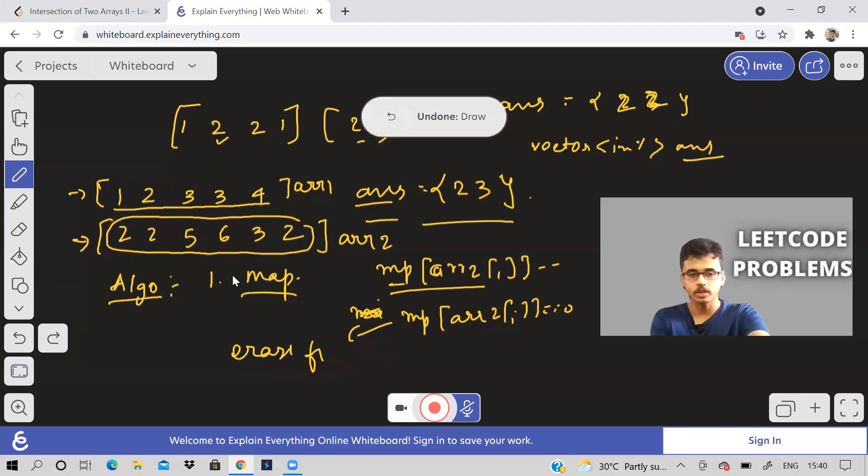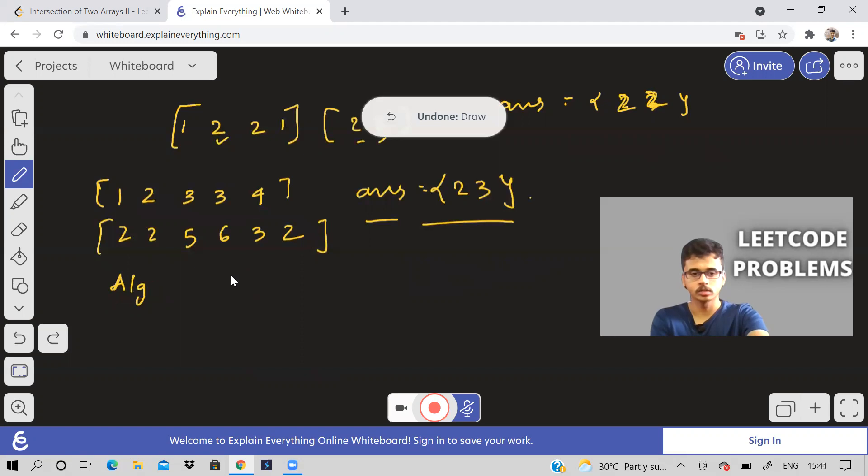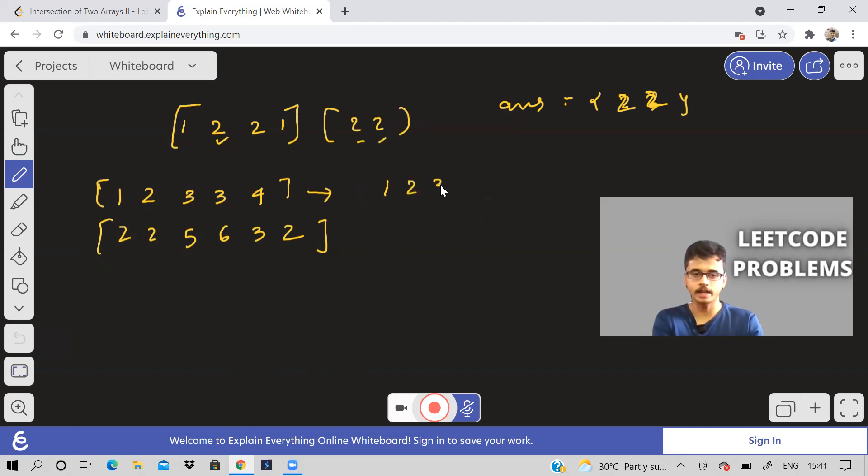Now second method, which is more interesting is we can sort it. So what happens if, okay, let me sort this array. So this array is already sorted actually. And if I sort this also, it is going to be two, two, two, three, five, six.